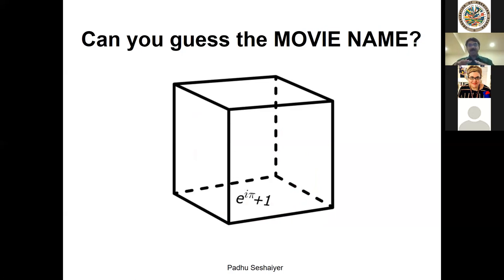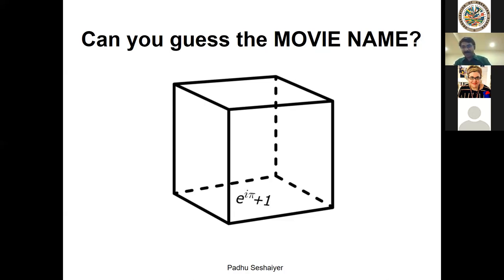I'm increasing the level of difficulty — as a teacher, you want to include everyone and not keep the task too low. Someone says 'Cube' — very good, a math word. Then I sneak in a small symbol: there's an E, there's an I, and there's a pi. It's one of the most beautiful results in mathematics: e to the i pi plus one equals zero. Daniel figured that out. Put the cube and the zero together — the movie is called 'Cube Zero.'